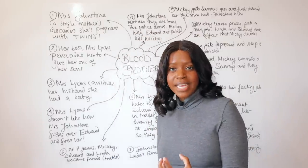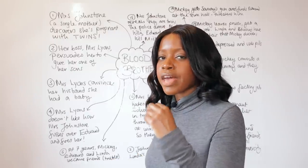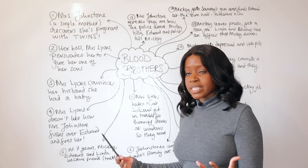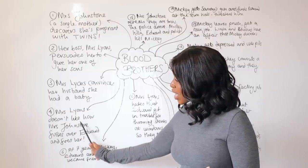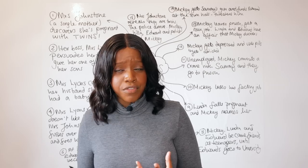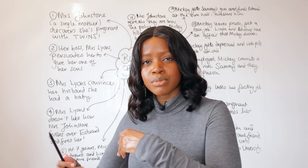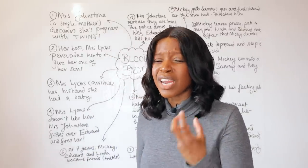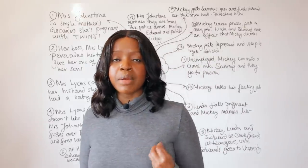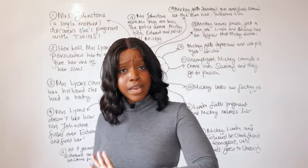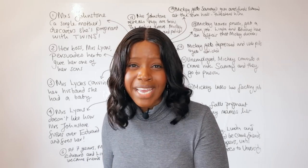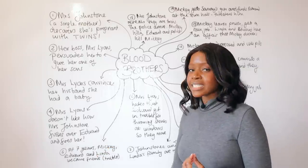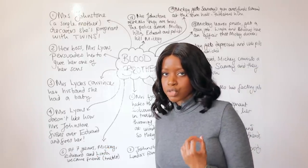Mrs. Lyons raises the family, and she is the only one who knows Edward is not her biological son. She continues employing Mrs. Johnstone, but gradually becomes displeased when Mrs. Johnstone fusses over Edward during her work around the house. Mrs. Lyons, very possessive and quite classist, doesn't want Edward to pick up any working-class habits from his birth mother. She ends up firing Mrs. Johnstone, who feels deeply betrayed — she had hoped to at least watch her son grow up.